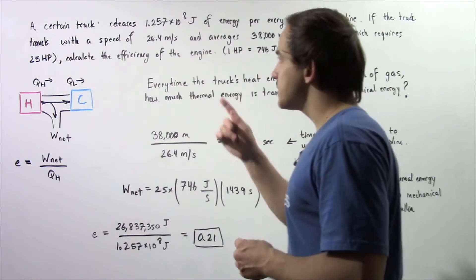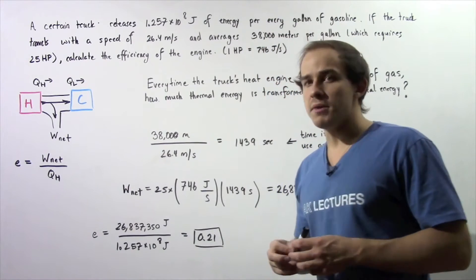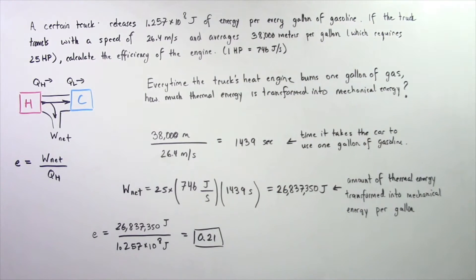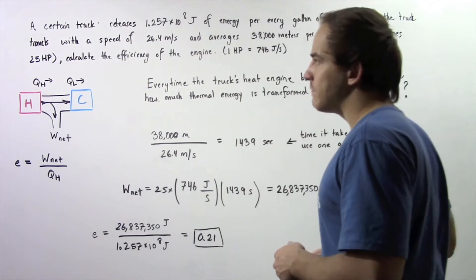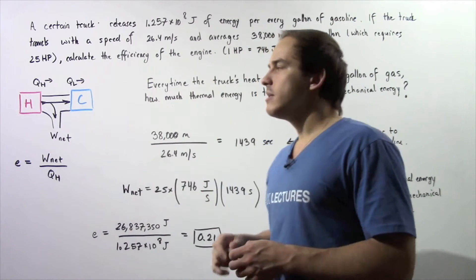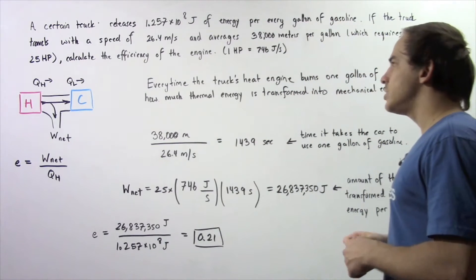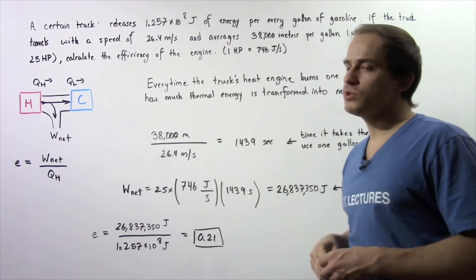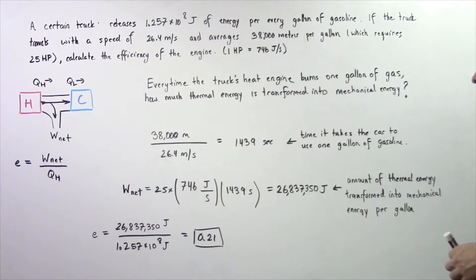If the truck travels with a speed of 26.4 meters per second and averages 38,000 meters per gallon which requires a power of 25 horsepower, calculate the efficiency of the heat engine inside the truck. Recall that 1 horsepower is equal to 746 joules per second.